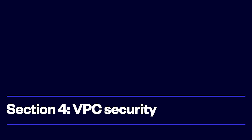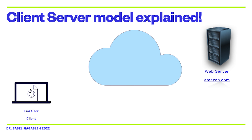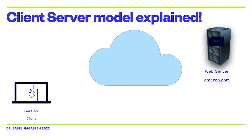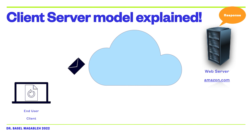Now let us understand how we can add security layers to our VPC. But before that, we need to understand how communication actually works in a computer network. In computer networks, a computer is able to access web server resources using a model called the client-server model. The client initiates the request and the server responds by sending the message back to the client.